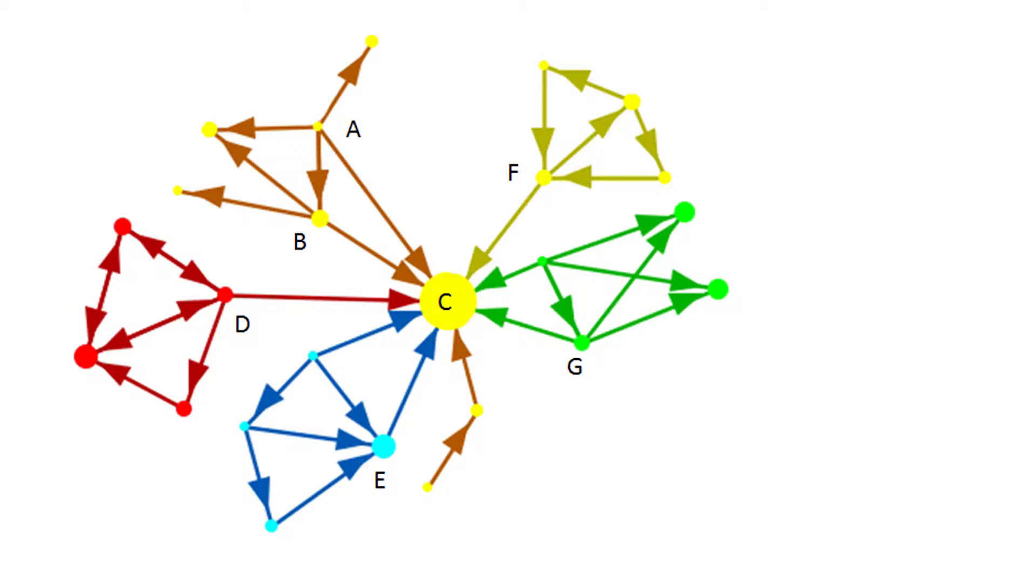I also notice that C plays an important role as a resource hub and is an important source of information for all the cliques. Because every clique is seeking something from C, it has the potential to broker new relationships between cliques.